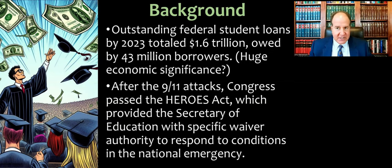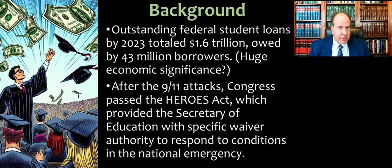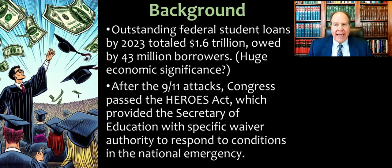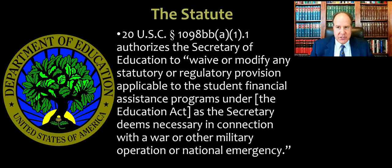The Supreme Court majority takes that as obviously having huge economic significance — those are really big numbers. But the question is how big they are compared to things like our gross domestic product and the federal budget overall. In September 2001, we had the terrorist attacks on 9/11, and in response, Congress passed a lot of legislation and financial assistance, including something called the HEROES Act, which provided the Secretary of Education with a specific waiver authority to respond to conditions in that national emergency.